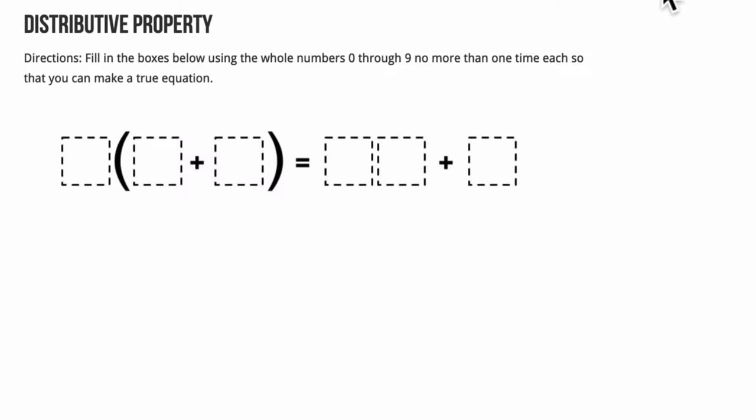Hello and welcome. So in this problem, it's from OpenMiddle, it's a great website I like to use. We're trying to place the digits 0 through 9 in each box without any repeats to make this equation true. So pause the video, try it out, see what you can do, and press play when you're ready to work on it together.